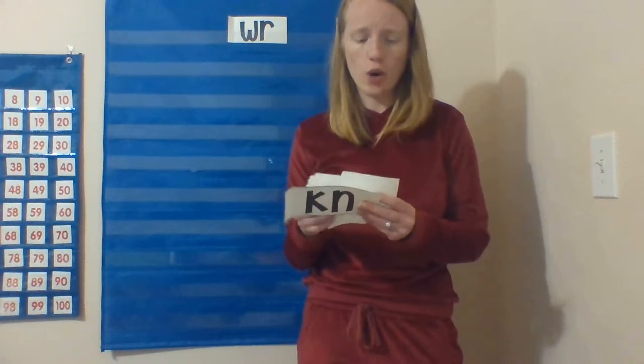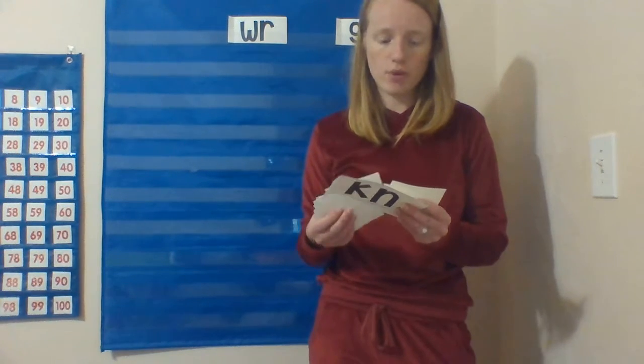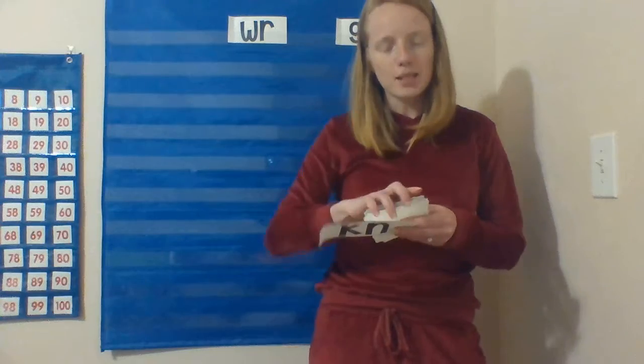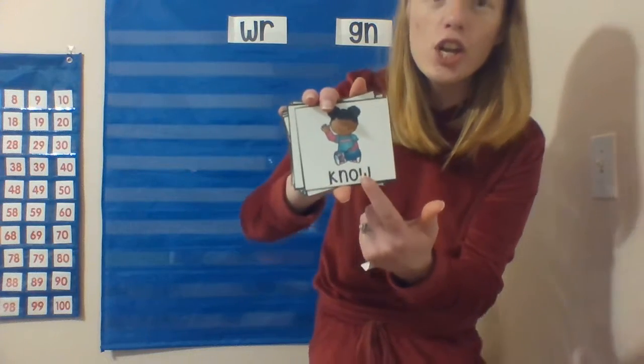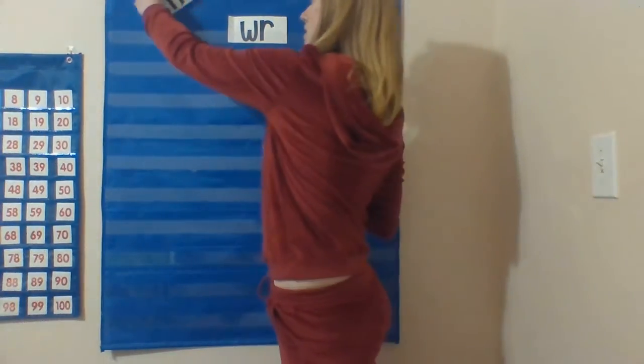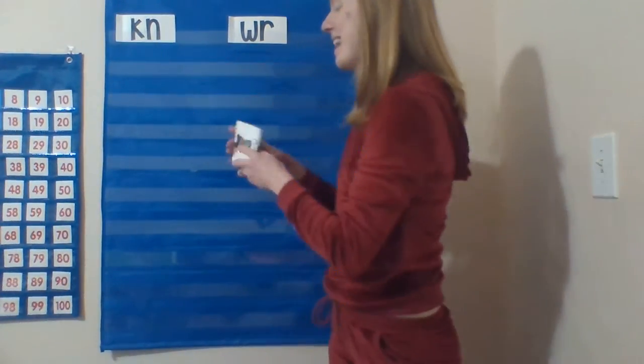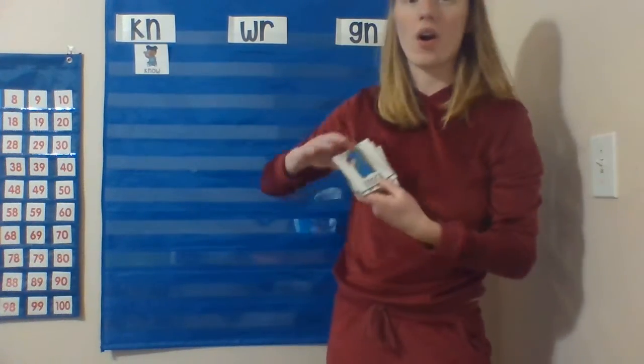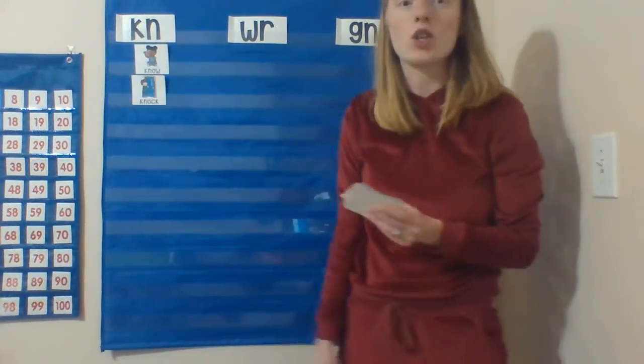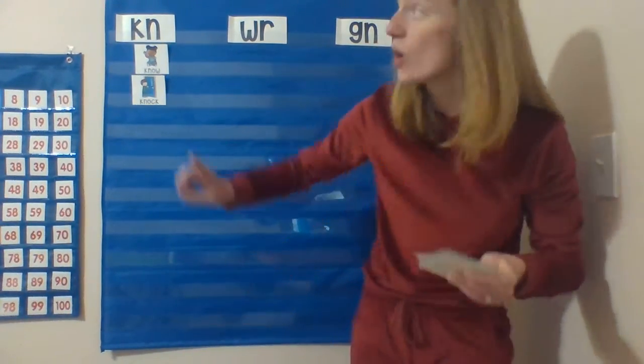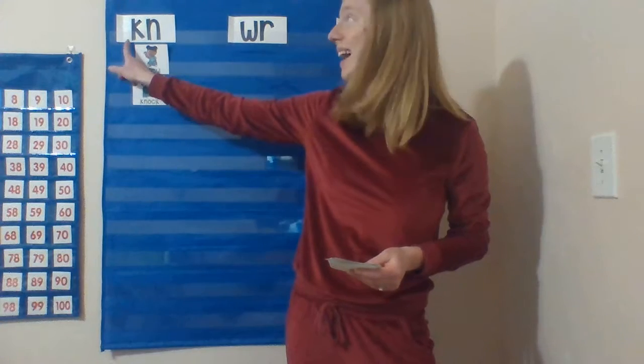In words like know, knit, or knock, the K is going to be a ninja. When you see the letters K and N right next to each other, you know that K is not going to make a sound. So KN makes the N sound, just like the regular N.